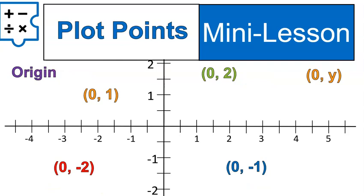Now we're going to plot some points. I have four points for you to go ahead and plot. If one of the points looks a little bit weird, just ignore that one for now and we'll get to it in a second. The point 0, 1 would be located right here — it moves 0 along the x-axis and goes up 1 place. Then we've got 0, negative 2 — 0 right or left, and then it goes down 2, or negative 2 on the y-axis. The blue point is 0, negative 1. The green point is 0, positive 2. And the origin is also called 0, 0.